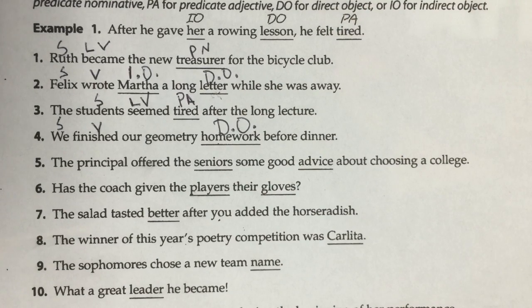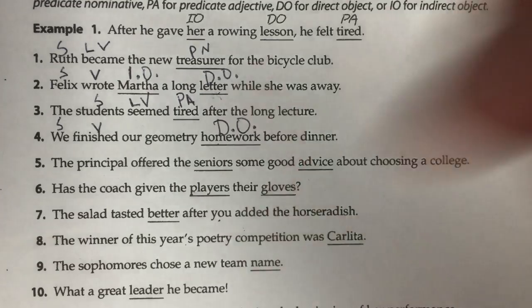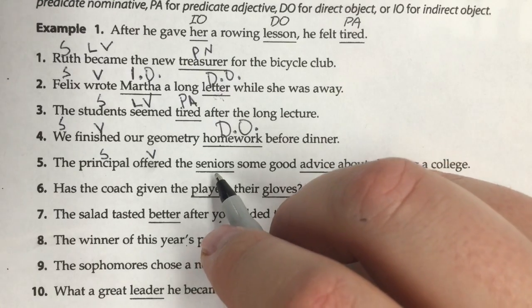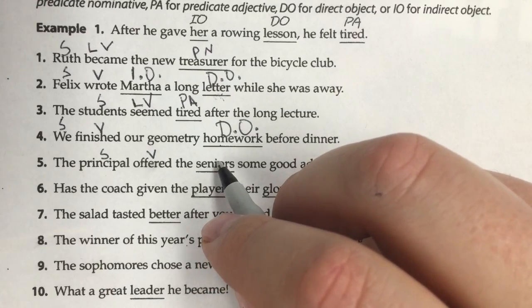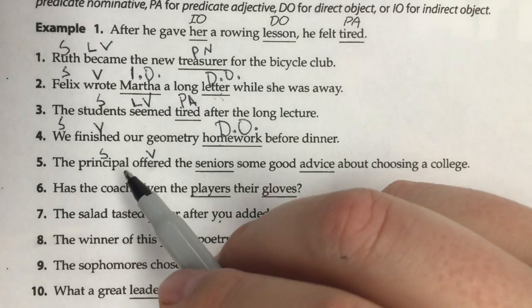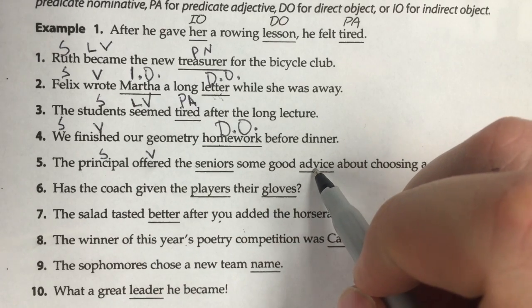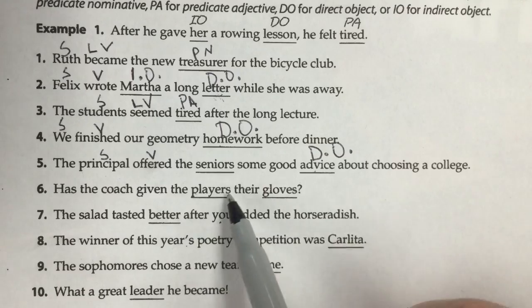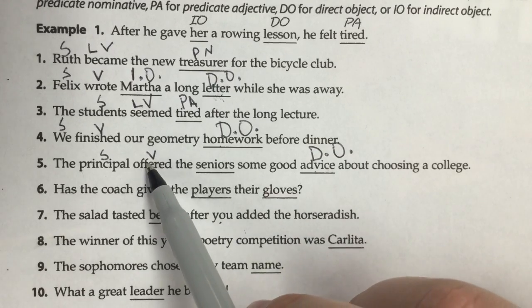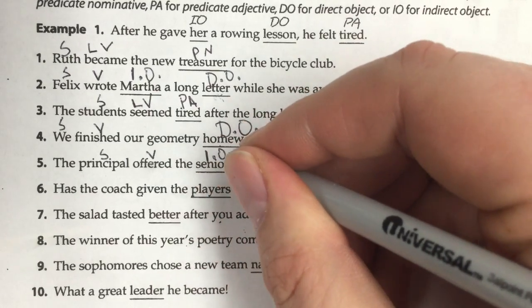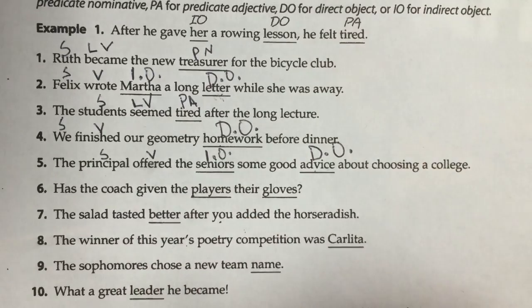Number five: 'The principal offered the seniors some good advice about choosing a college.' Here is our subject and here is our verb. Offer is an action verb, so we're going to have a direct object. The principal offered who or what? They didn't offer people — the principal is actually giving advice. That's the actual thing being transmitted, so advice is our direct object. Then, who gets the direct object? The answer is seniors, making seniors the indirect object, sandwiched between the verb and the direct object.